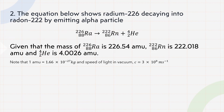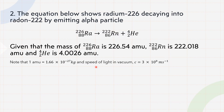Let's try solving the next question. The question shows radium-226 decaying into radon-222 by emitting an alpha particle. We can see the formula is given and the process is radioactive decay. The mass of radium, the mass of radon, and the mass of the alpha particle — which is helium — are all given, along with the value of the speed of light.